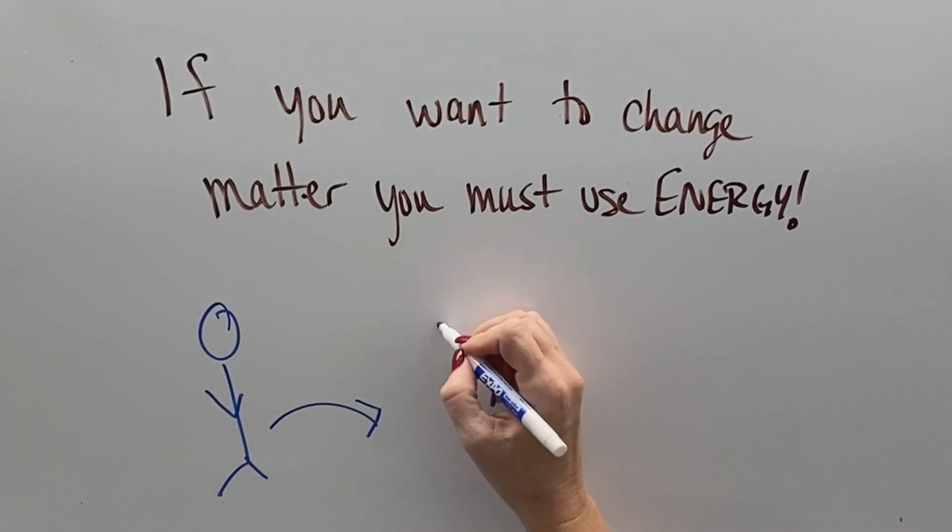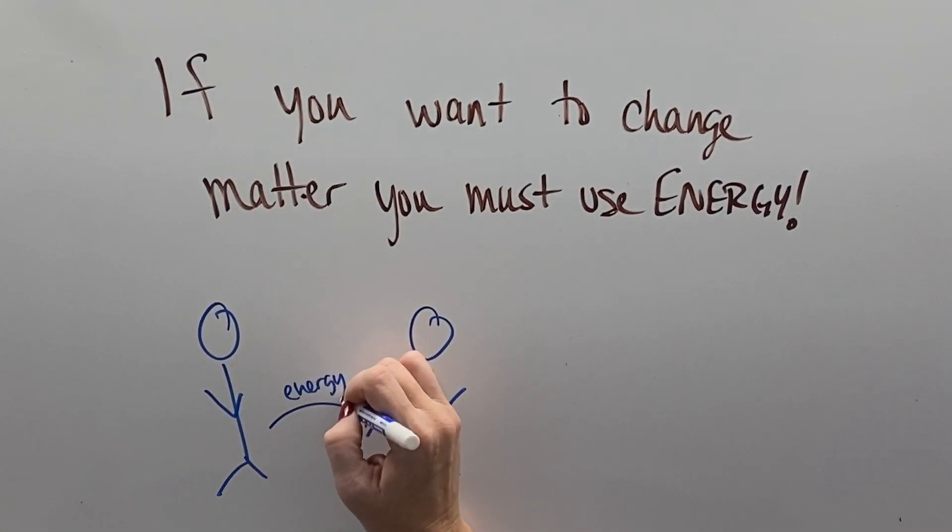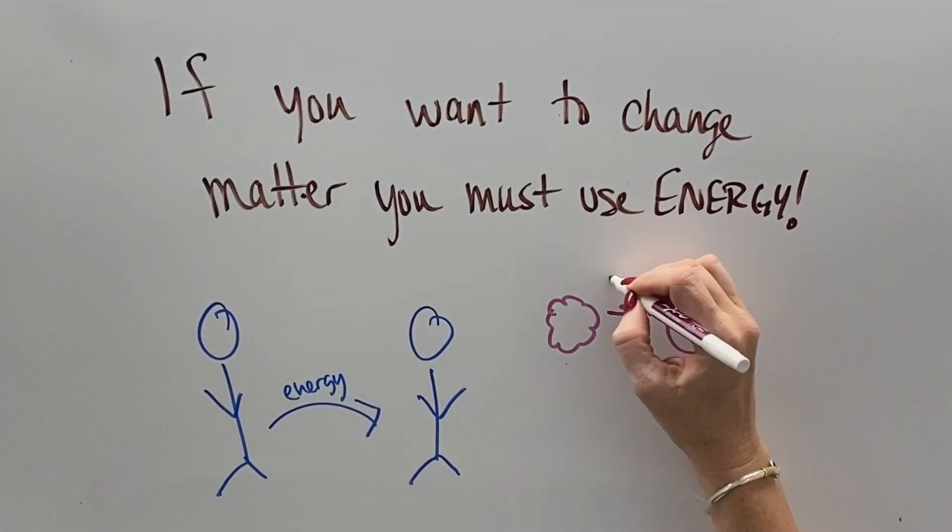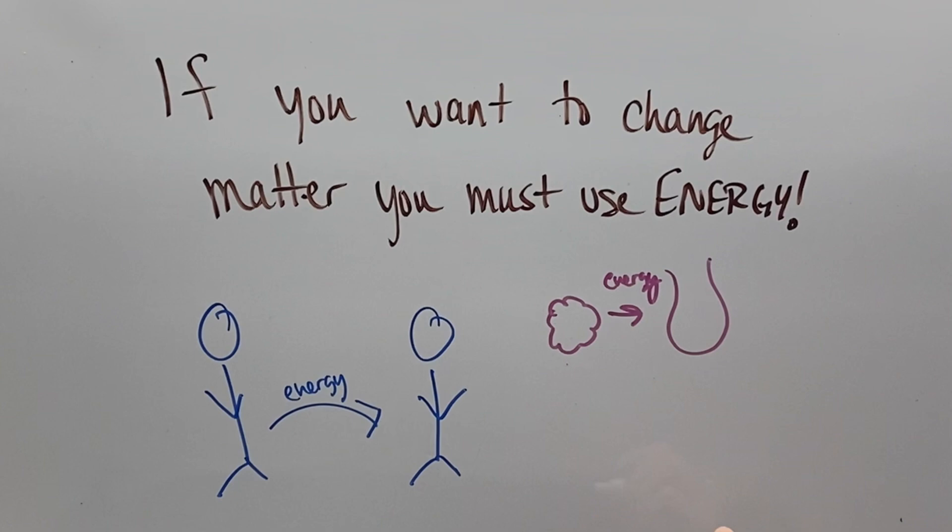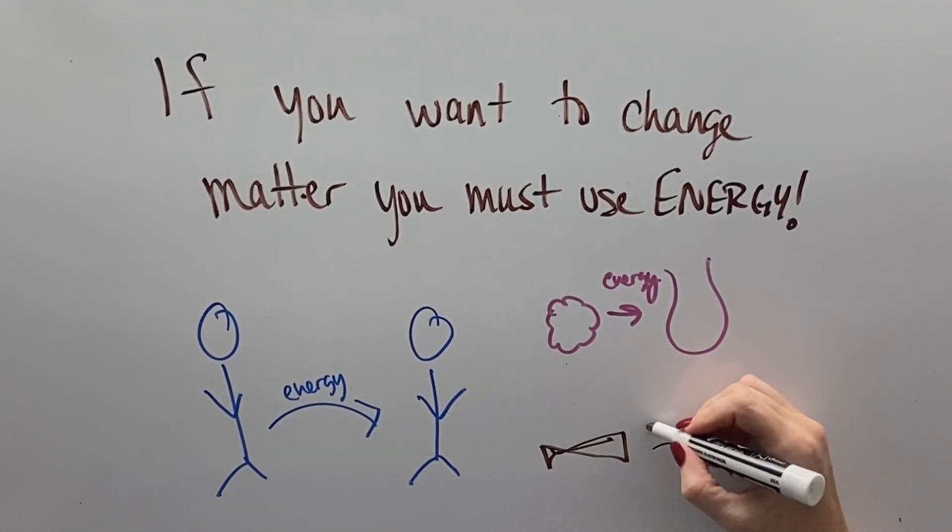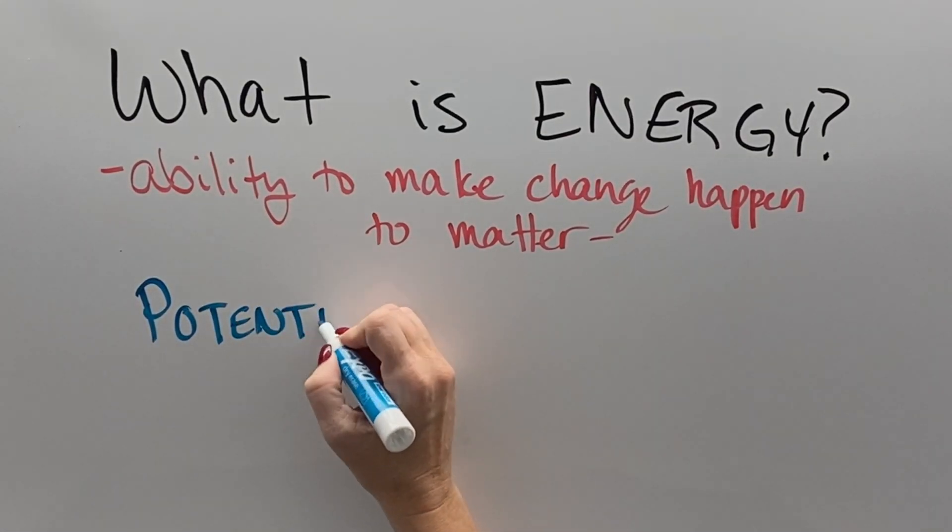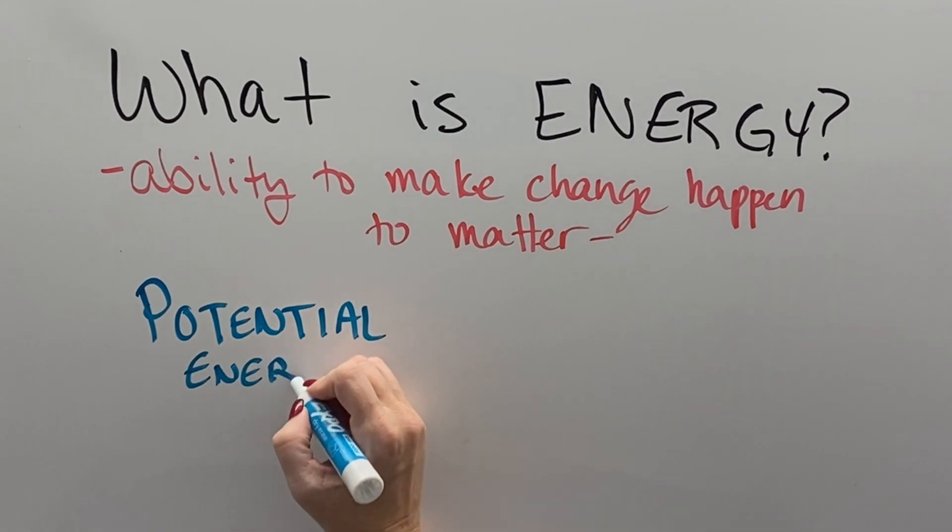If you want to cause change to happen to matter, you must use energy. Like if you want to move your position on the planet, if you want to shape some Play-Doh into some sort of vase, or if you want to burn some logs in a fire and create ash. So energy is defined as the ability to make change happen to matter.